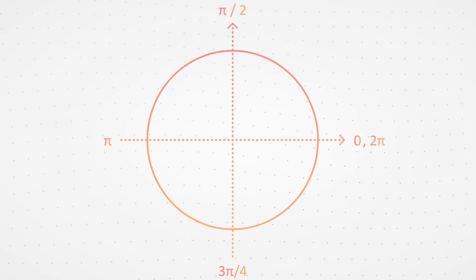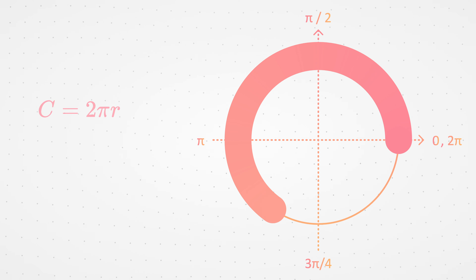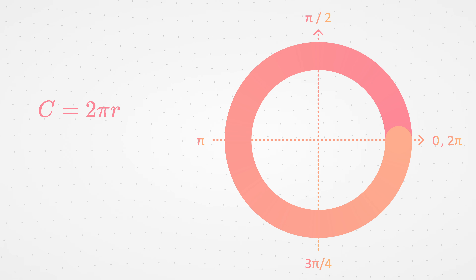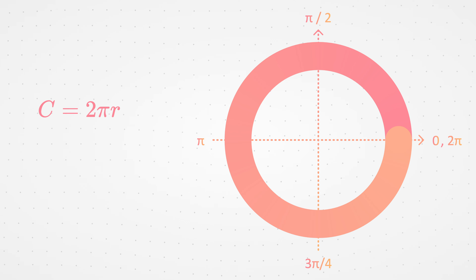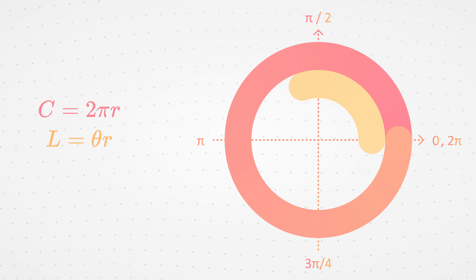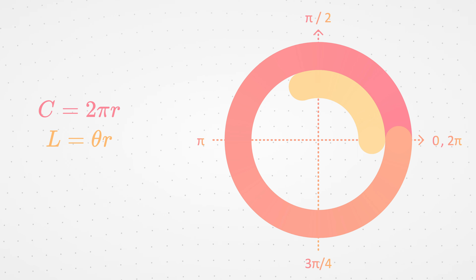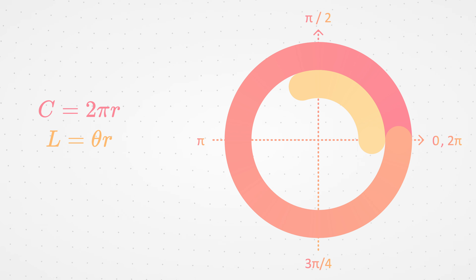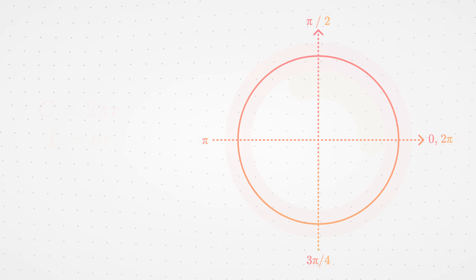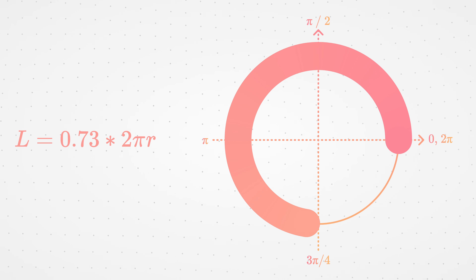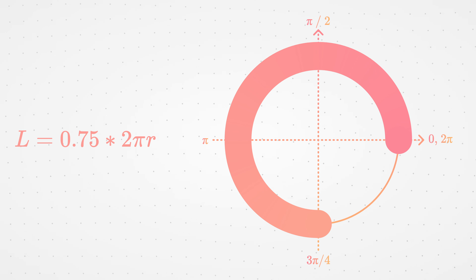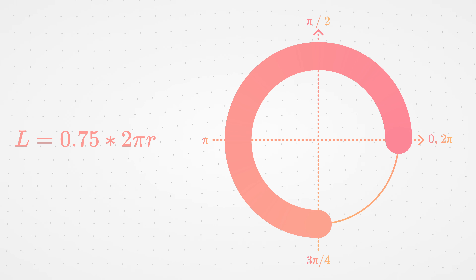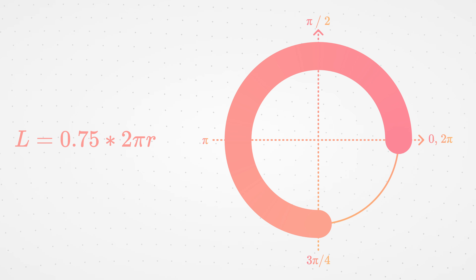Let's draw a circle. The perimeter of a circle is radius times 2pi, and here 2pi is the angle made by the full circle in radians. We can generalize this formula: the length of an arc circle equals radius times the angle of the arc circle in radians. The length of an arc circle is useful if you want to draw a circular progress bar. Imagine a circular progress bar at 75%. We know that the angle is 3 quarters of 2pi, which is 1.5pi, and the length of the arc circle is radius times 1.5pi.